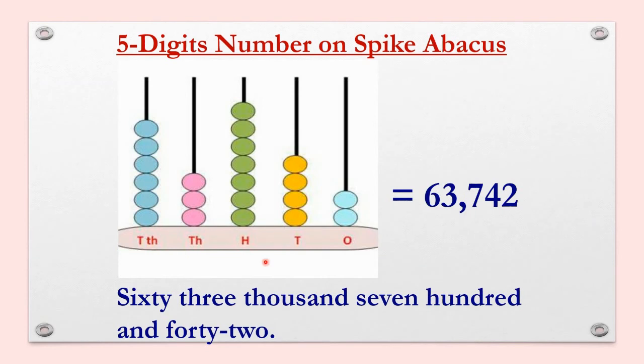Now let us see how to read 5-digit numbers on spike abacus. In 1's place there are 2 beads, that represents 2. In 10's place there are 4 beads, that represents 4. In 100's place there are 7 beads, that represents 7. In 1000's place there are 3 beads, that represents 3. And in 10,000's place there are 6 beads, that represents 6. So this number can be read as 63,742.